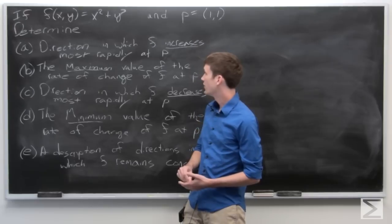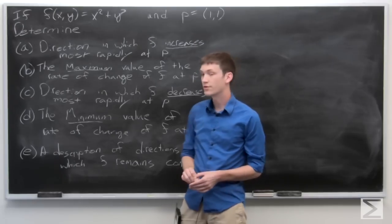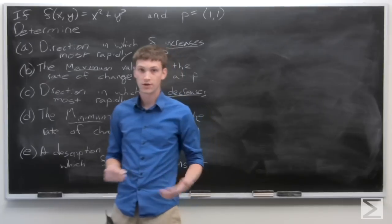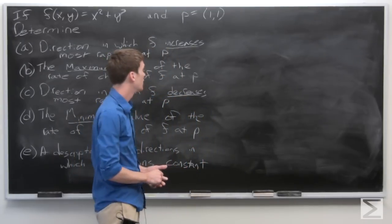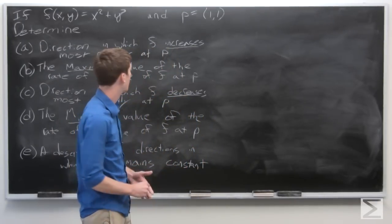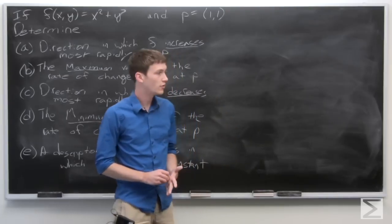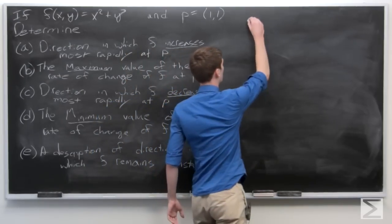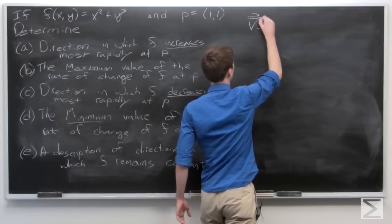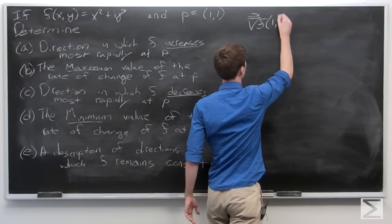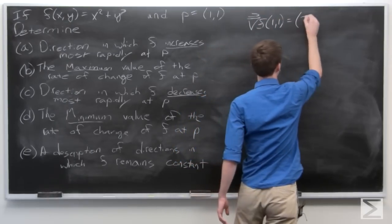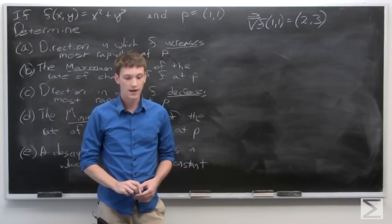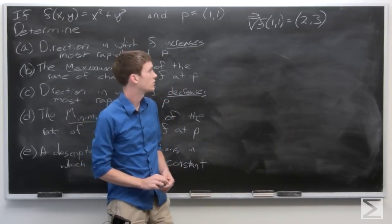For part a, we want to find the direction in which f increases most rapidly, which is going to be just the direction of the gradient vector of f. We recall that we've seen this function before in a previous problem of this section, so we know already that the gradient vector of f at (1,1) is equal to the vector ⟨2, 3⟩.